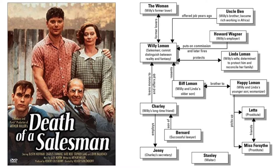Howard is very much an archetype — a suit who is uncaring, all about business, and doesn't see the relationships behind it. He is an inhumane businessman, which I would say is a huge theme throughout Death of a Salesman: how American business operates. 'Business is business' is said over and over again in the play, and it lacks the humanity and social responsibility that Arthur Miller thinks it should have.